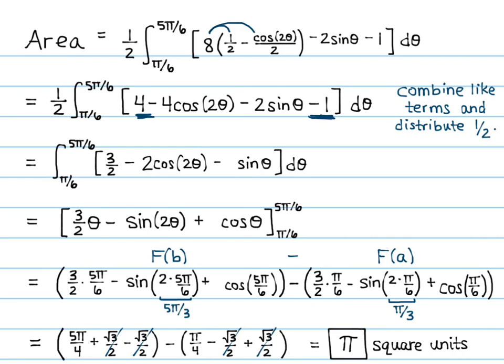So the area between the circle and the cardioid is pi. To recap: find your bounds first, then use the formula — area equals one half times the integral using your bounds of the outer radius squared minus the inner radius squared d theta.